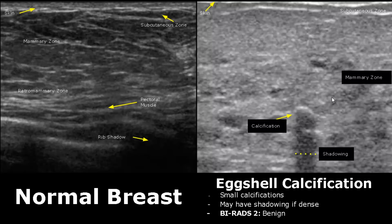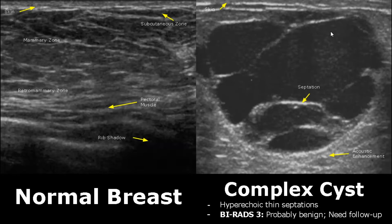Complex cysts are rated as BI-RADS 3 because they need a follow-up exam. Usually thin hyperechoic septations are benign, but they still need a follow-up, which is why they are rated as BI-RADS 3.